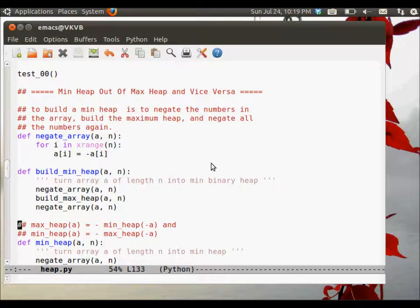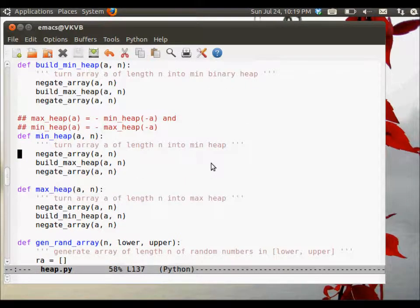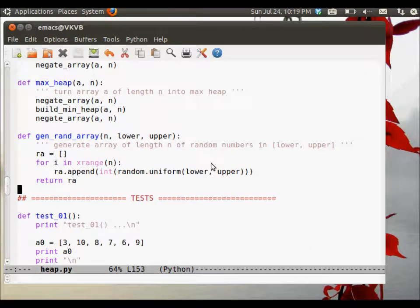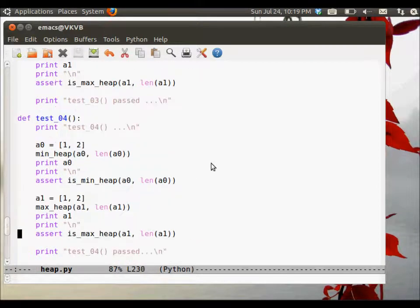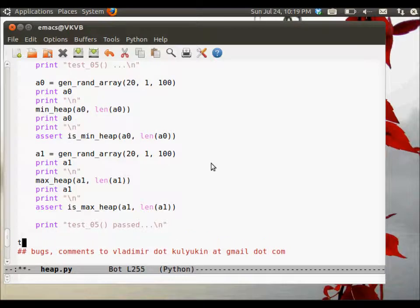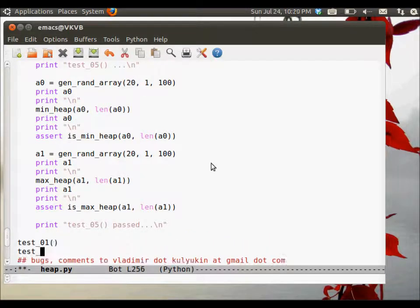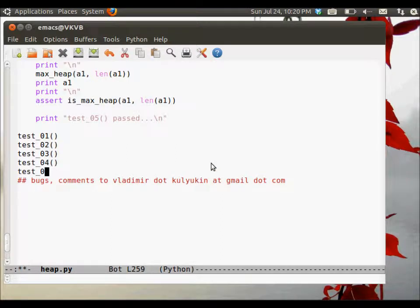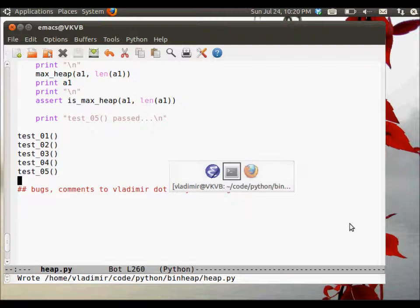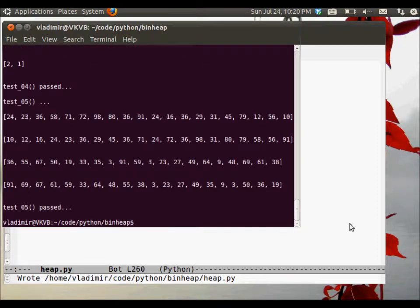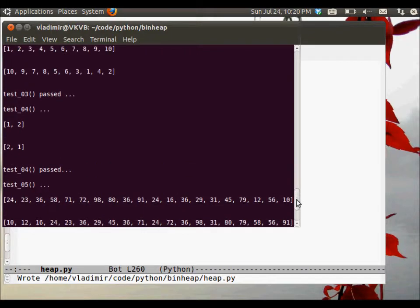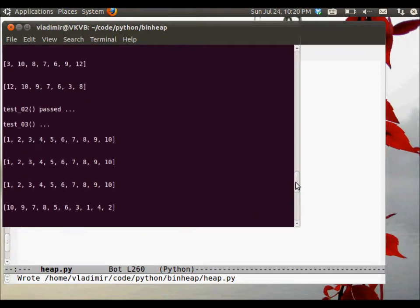Then we define two procedures, min heap and max heap, that actually implement those principles. Min out of max and max out of min. There is a procedure that generates an array of random numbers in the range from lower to upper. Then, there is a whole bunch of tests that we can run to test our code. Let's run them. Looks like no assertion crashed. Tests have passed.